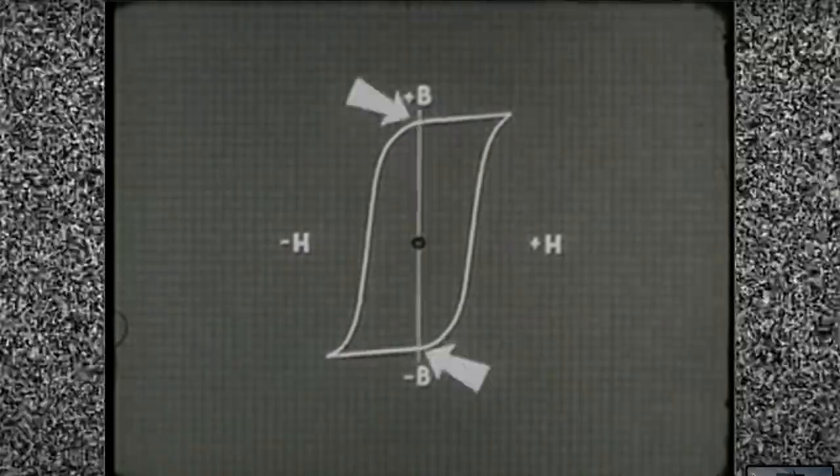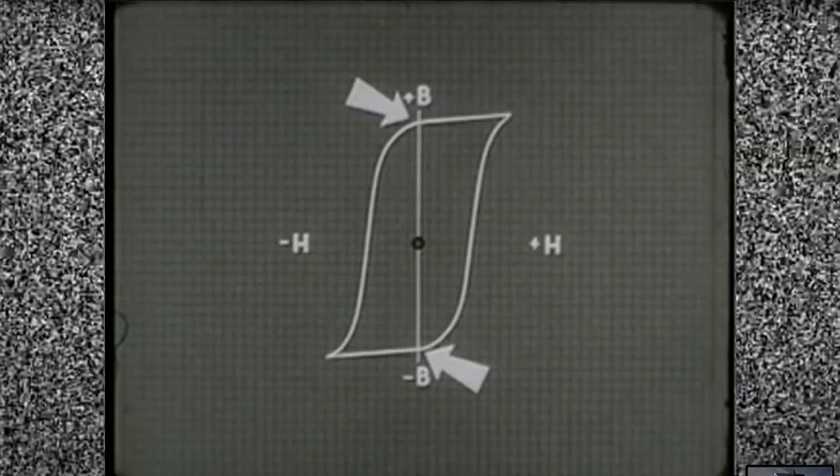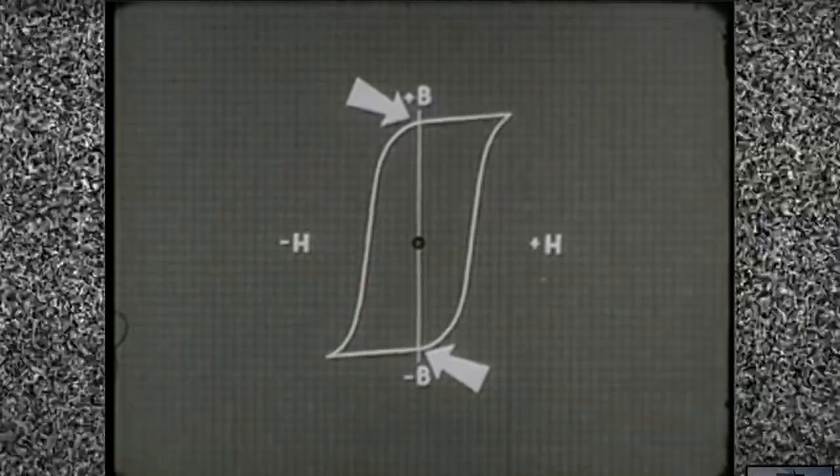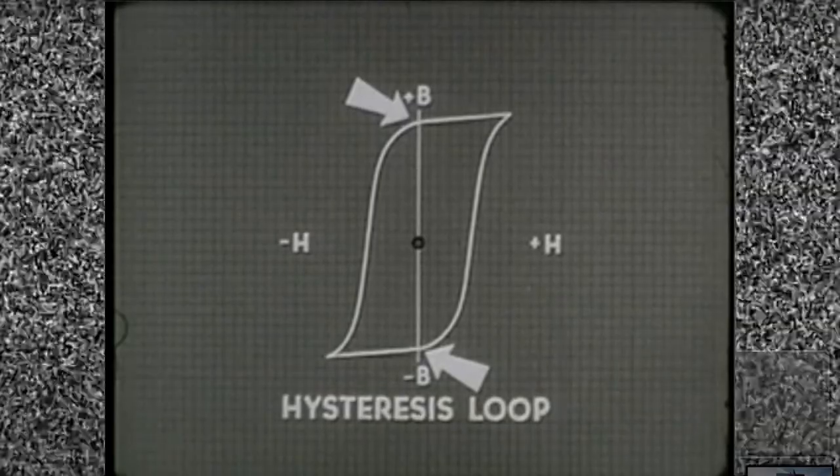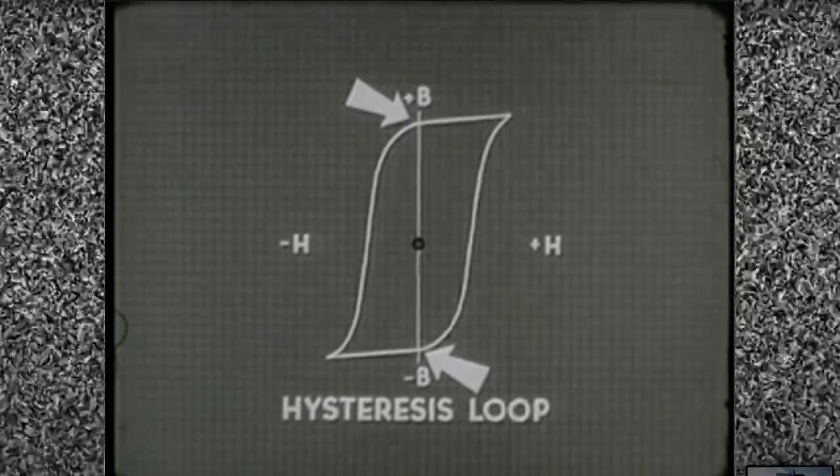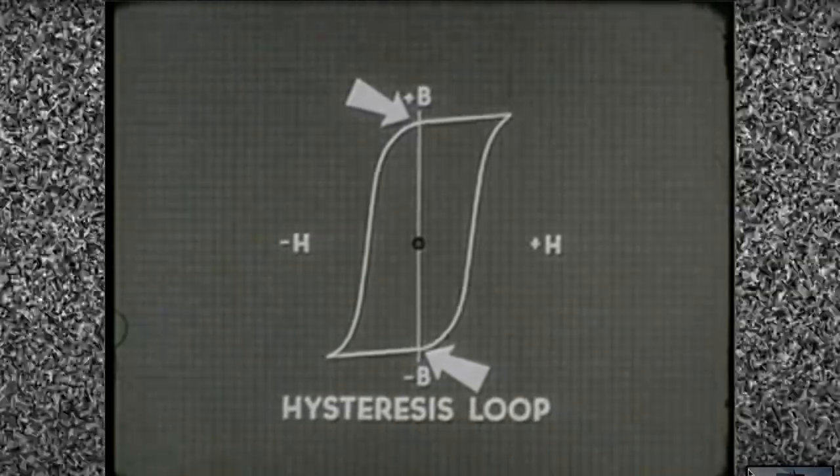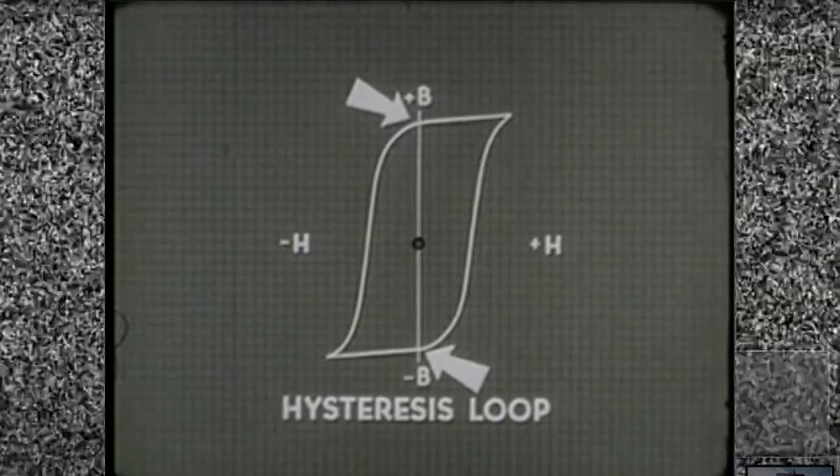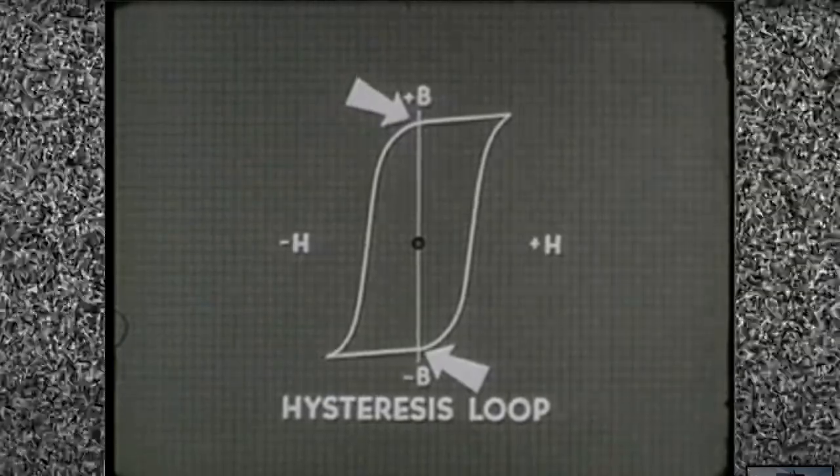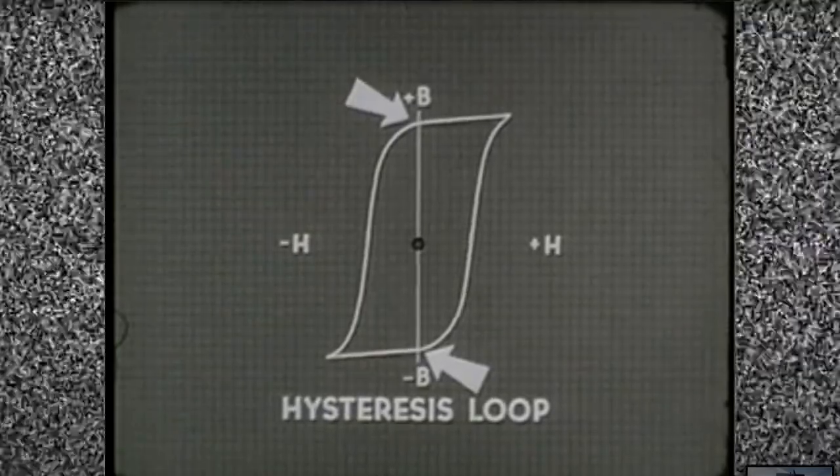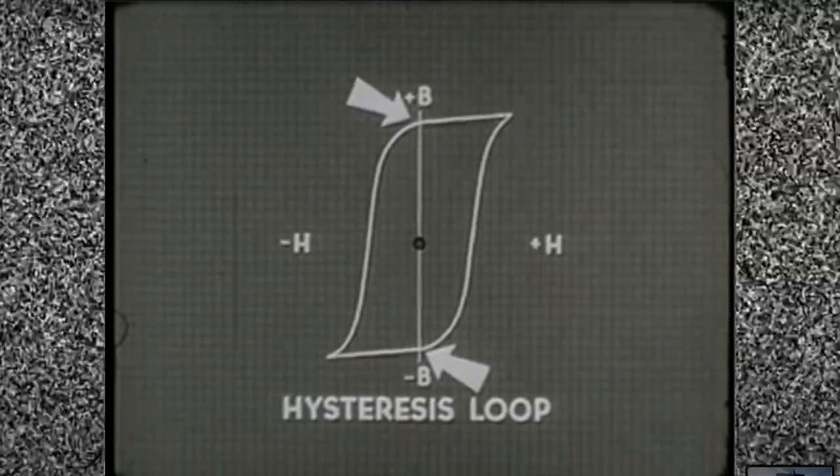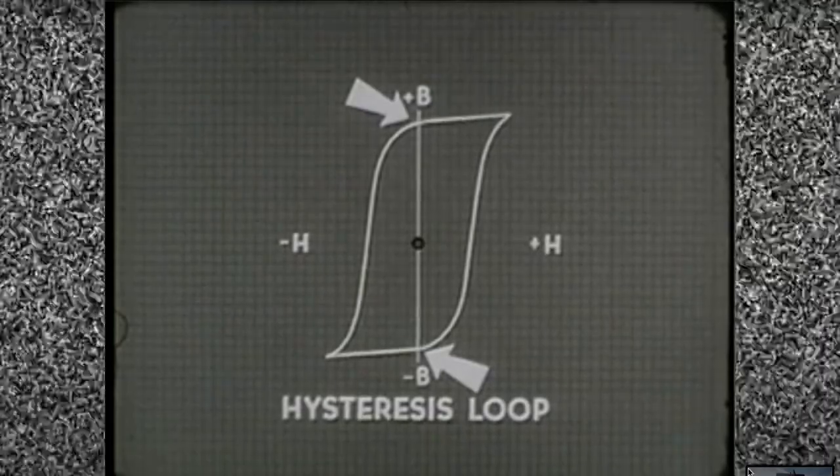The rectangular loop tells us the limits of saturation that can be reached with dot and non-dot current. Also, the amount of magnetism that will remain in the core after the current stops. The word hysteresis comes from a Greek verb meaning to lag behind. A hysteresis loop shows how much magnetism remains behind after the force that produced it is gone. The shape of the loop indicates the ability of a particular core material to retain magnetism.